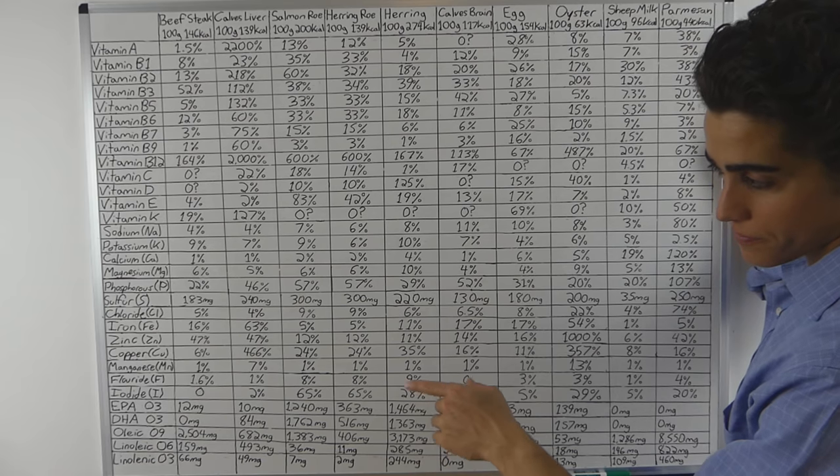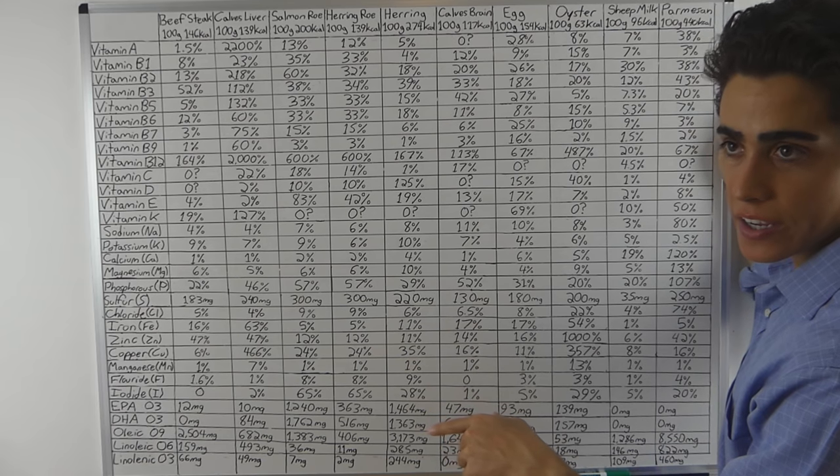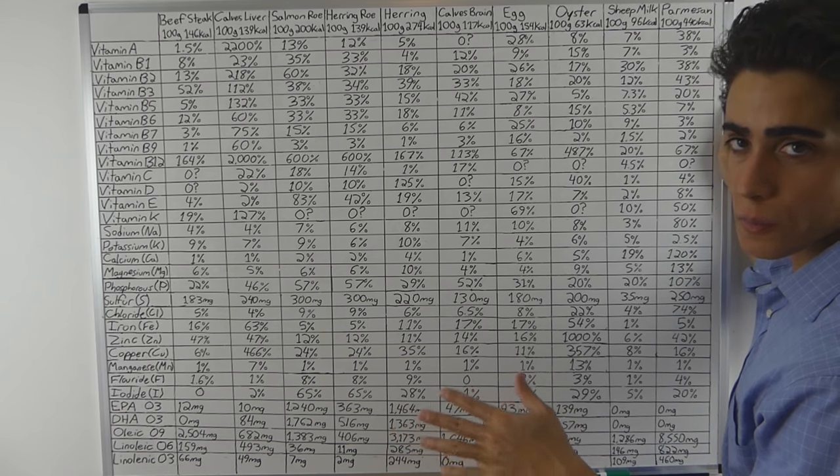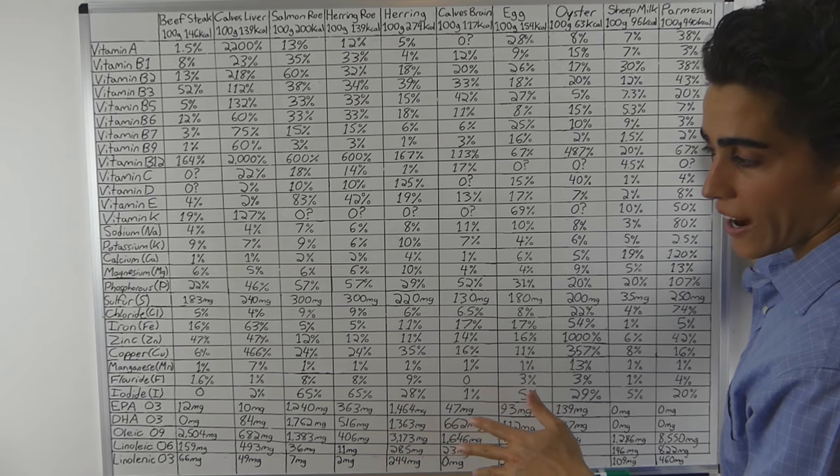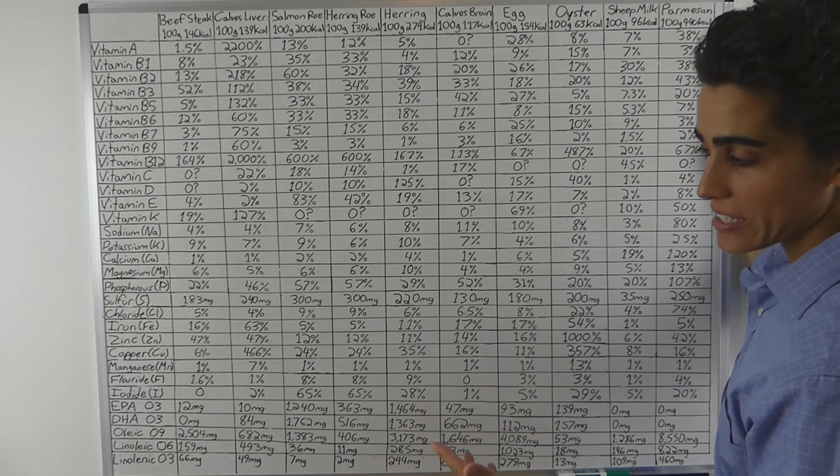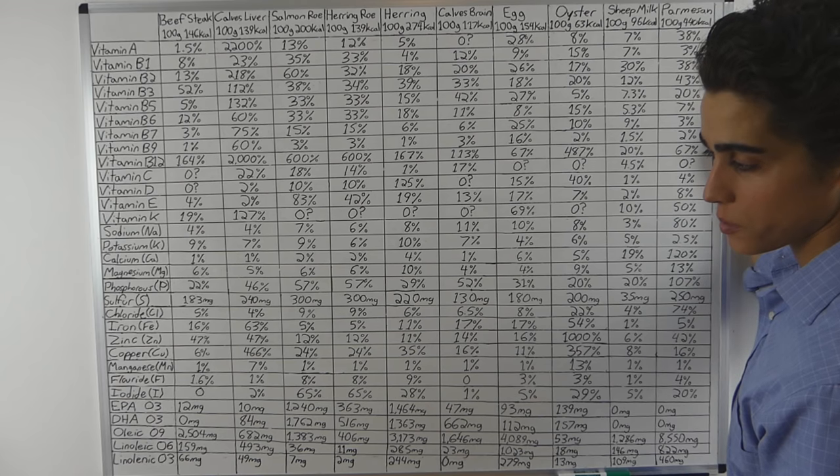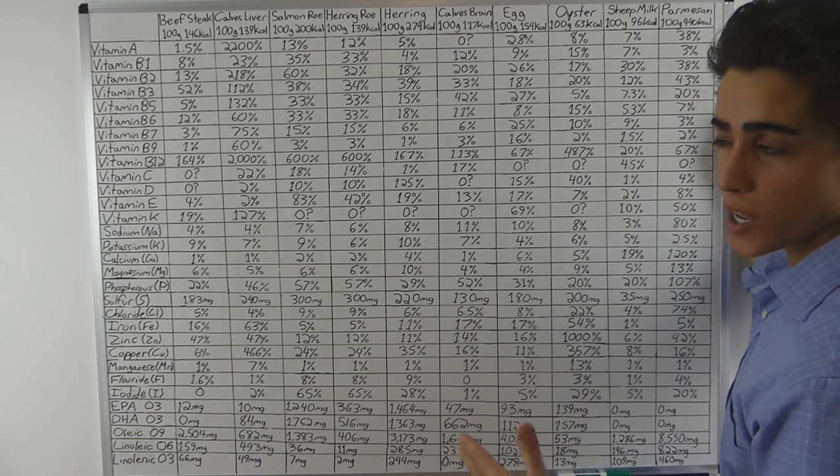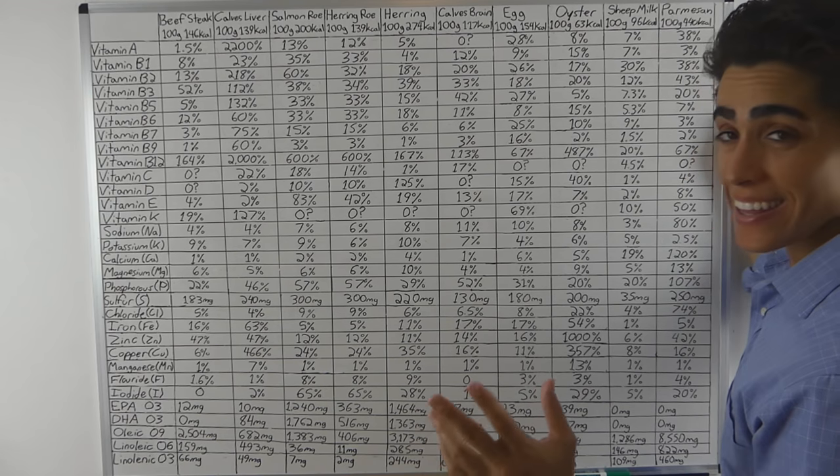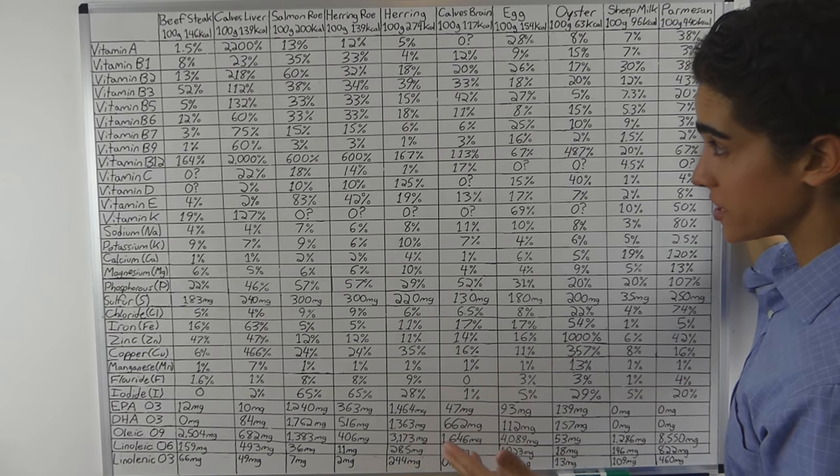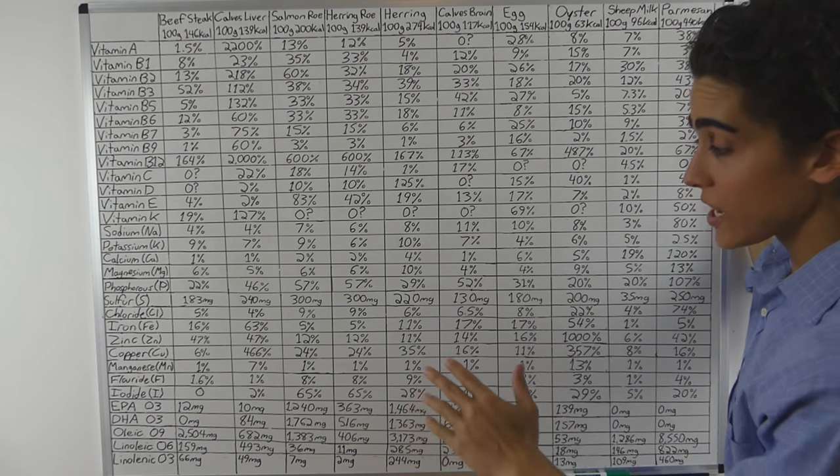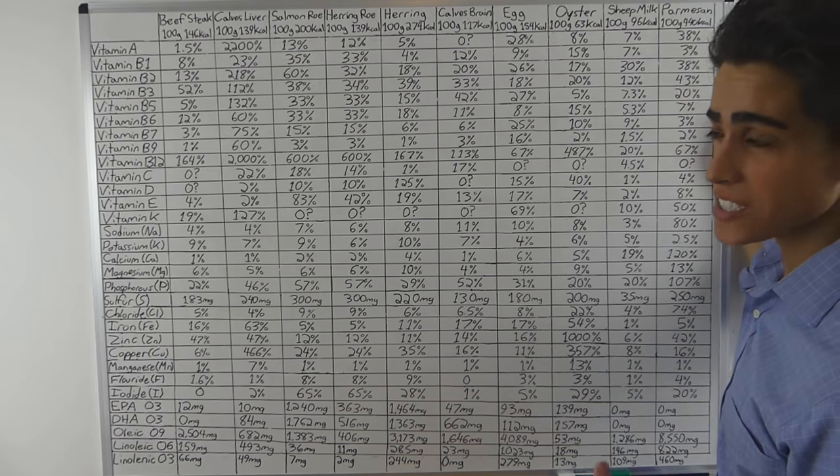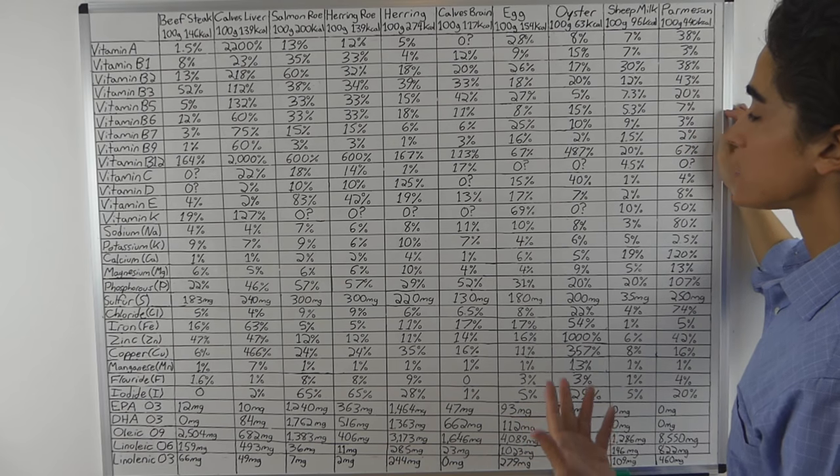The interesting thing here to say is that in ruminant animals and land animals, EPA and DHA tends to be low in the muscle tissue, whereas linoleic and linolenic acid tends to be higher in the muscle tissue. But if we look at brain tissue and marrow tissue of ruminant animals, that's where they concentrate the EPA and the DHA. In fish, EPA and DHA is always incredibly high. Same with eggs.